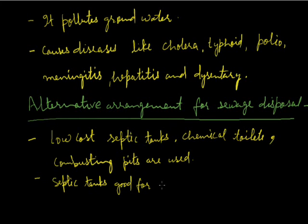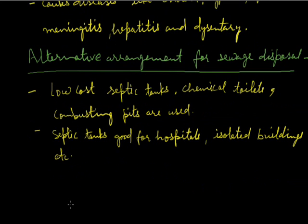Places where septic tanks are good are hospitals and isolated buildings. Now the excreta collected in these septic tanks can be flowed through covered drains into a biogas plant. And biogas produced here is used as a source of energy.